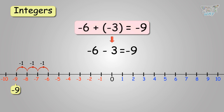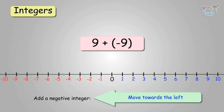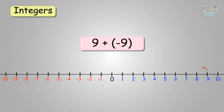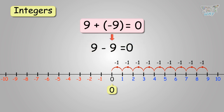The sign will remain negative. Next, we have to add negative 9 with 9. Whenever we add a negative integer, move towards the left. Start at 9 and move 9 places towards the left to get 0. 9 plus negative 9 is 0. Therefore, whenever we have two opposite signs, it becomes a minus sign. So, 9 plus negative 9 is the same as 9 minus 9, which equals 0.